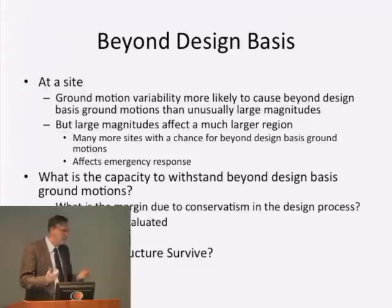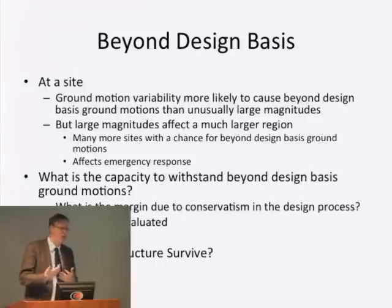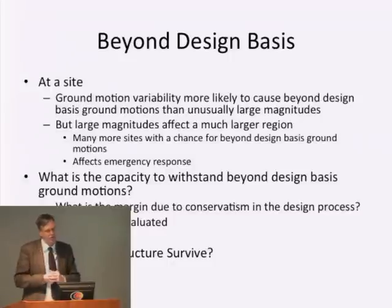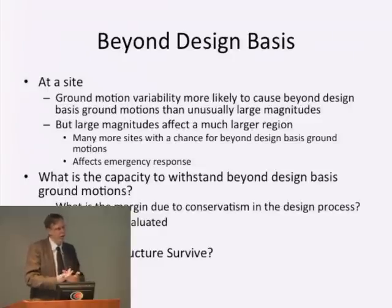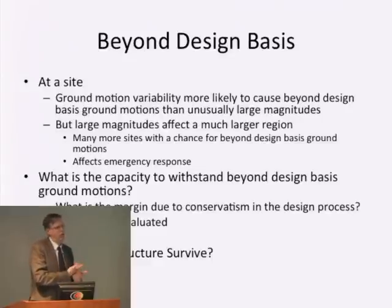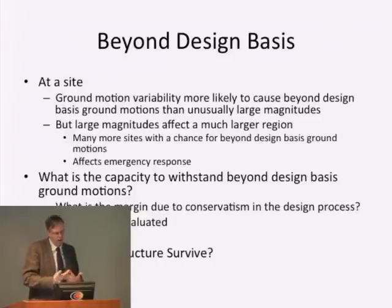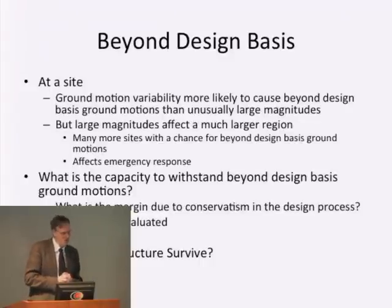At the end, we're talking about what is the capacity of structures and our infrastructure to withstand beyond design-basis ground motion, and that is really about margin. How far over do you push that capacity curve? In infrastructure, we typically don't actually evaluate this, and in my opinion, we need to start doing that — to ask what have we bought, what is this system really going to behave as? In the nuclear business, where I spend about half of my time, everything is pushed to beyond design-basis to try to see what could happen and what could go wrong. I think we need to start doing that more broadly. So will our infrastructure survive? Some will, some won't, and we have to accept that kind of variability is going to occur. Thank you.